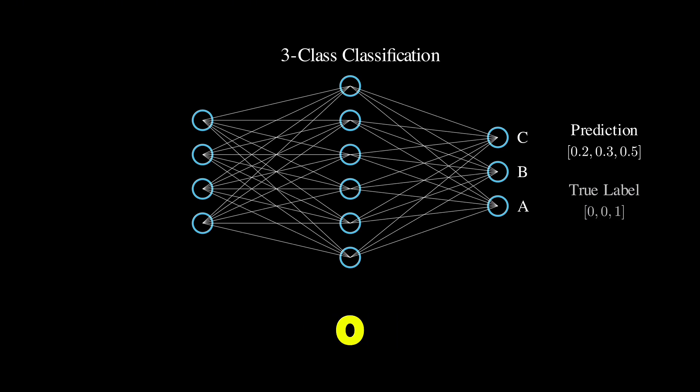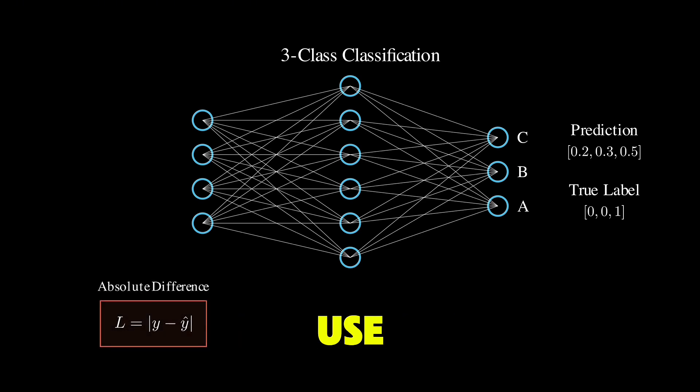If the true label is 001 or class C, how do we measure how wrong our prediction is? You might think to just take the absolute difference or use the mean squared error. These seem reasonable, but they are actually not great choices for classification.